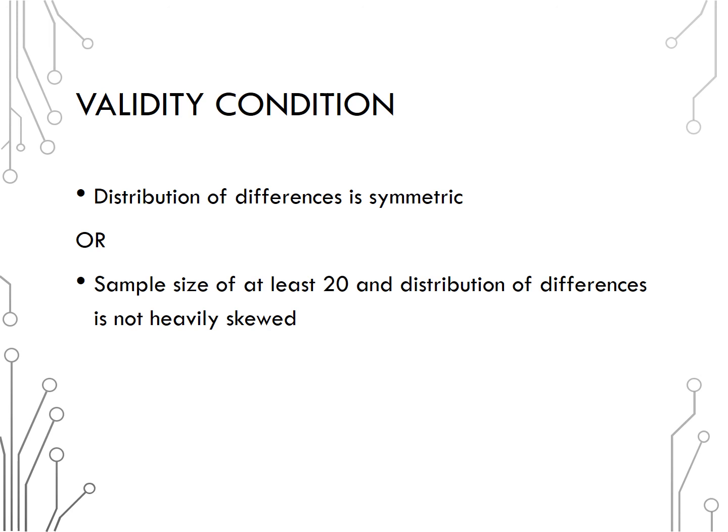Well now our data are the differences, so these validity conditions apply to those differences. In other words, the distribution of differences must be symmetric, or we must have at least 20 differences and the distribution of those differences is not heavily skewed.